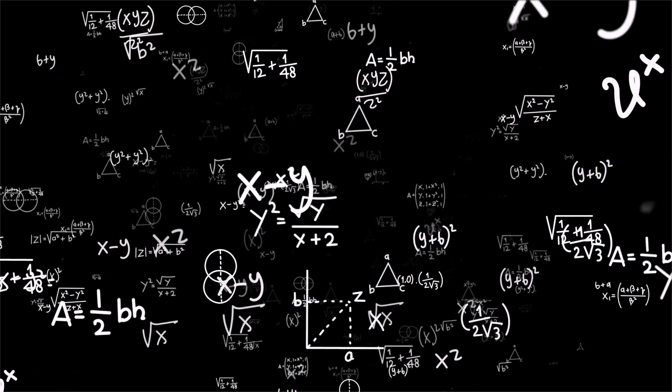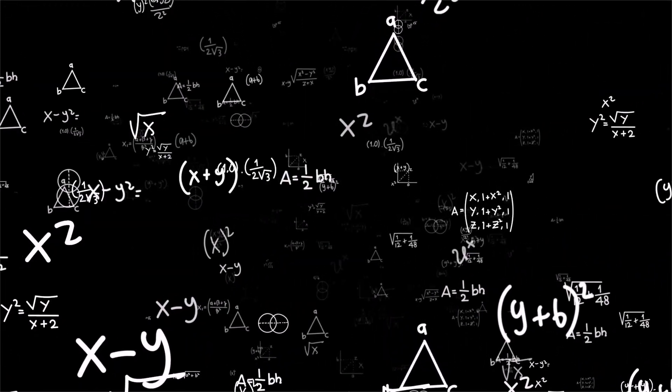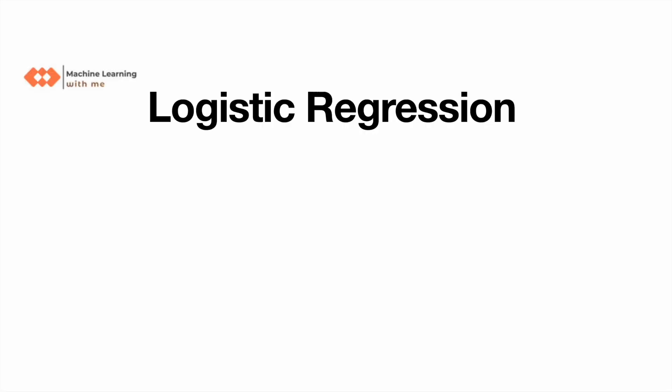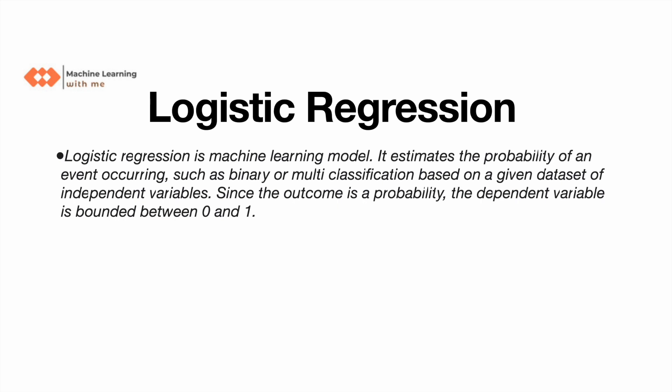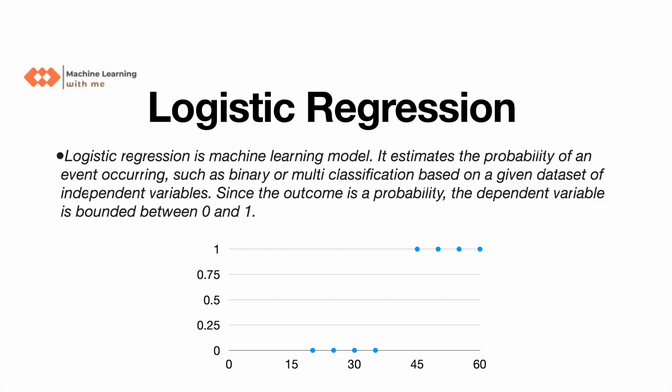What is logistic regression? Logistic regression is a machine learning model. It estimates the probability of an event occurring, such as binary or multi-classification, based on a given dataset of independent variables. Since the outcome is the probability, the dependent variable is bounded between zero and one. To understand logistic regression in simpler terms, we'll first understand what is binary and multi-classification.